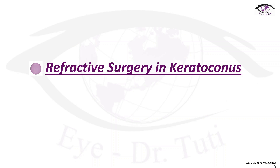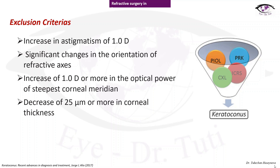Refractive surgery in keratoconus: not many surgeons prefer performing refractive surgery on keratoconus patients, and very careful screening should be performed. Exclusion criteria for refractive surgery include: increase in astigmatism of 1.0 diopter, significant changes in the orientation of the refractive axis, increase of 1 diopter or more in the optical power of the steepest corneal meridian, and decrease of 25 microns or more in corneal thickness.